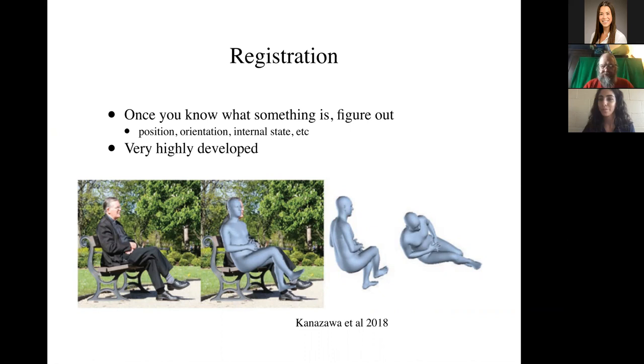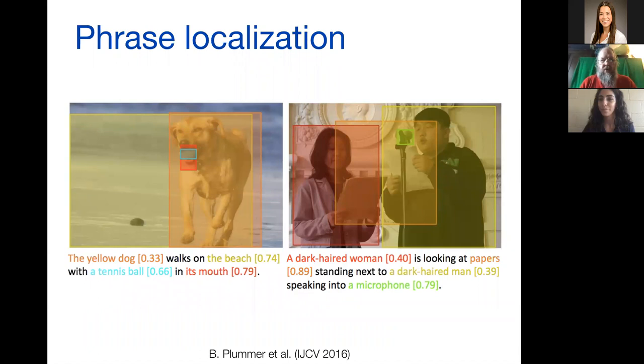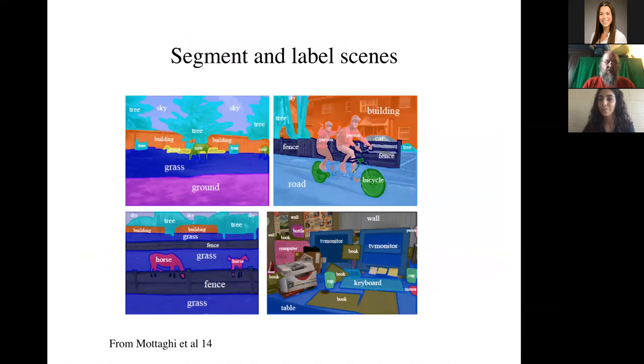And registration can, you can register things that are a bit more abstract than people. So for example, given a sentence describing a picture and a picture, you can find the pieces of sentence and localize pieces of image that correspond to those pieces of sentence. So there's an orange box around the yellow dog, there's a yellow box about the beach, there's a blue box around the tennis ball, and a red box on the dog's mouth. This extends to segmenting and labeling scenes. So we now have procedures that for reasonable collections of labels, usually somewhere between 14 and 70 labels, each pixel in the image is labeled with what it comes from. So you can see here, the road has been labeled, the bicycle has been labeled, the person has been labeled, the tree has been labeled, the building has been labeled, there's a car, and there are sky labels and TV monitor labels as well.